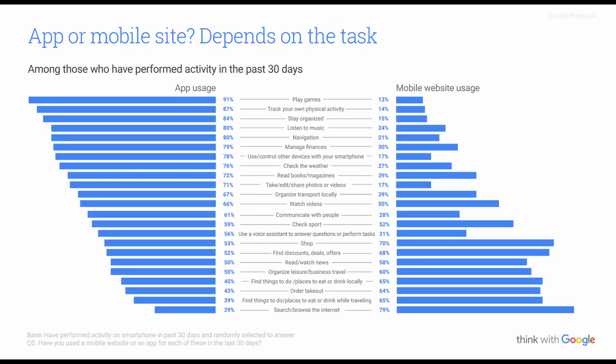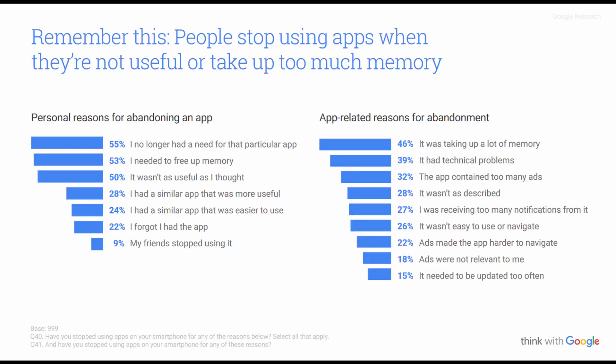Google also put together a list of how people prefer to access a specific activity. In terms of playing games, consumers are expecting a specific app — they don't want a mobile website. People want to play right on their phone, quickly access the game, kill a few minutes, and then go back to what they were doing. People also stop using apps when they're not useful or take up too much memory. The top reasons for abandoning an app are: they no longer have a need for it, they need to free up memory, it wasn't as useful as expected, a similar app was more useful or easier to use, or they simply forget about it.